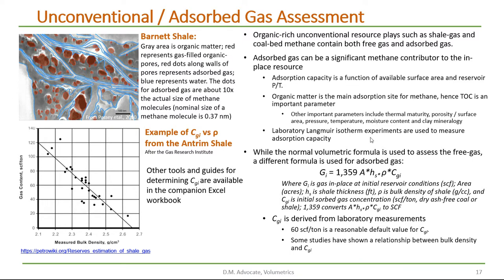Langmuir isotherm experiments in the laboratory are used to measure the absorption capacity. While a normal volumetric formula is used to assess the free gas in these shale gas plays, a different formula is used for the absorbed gas.